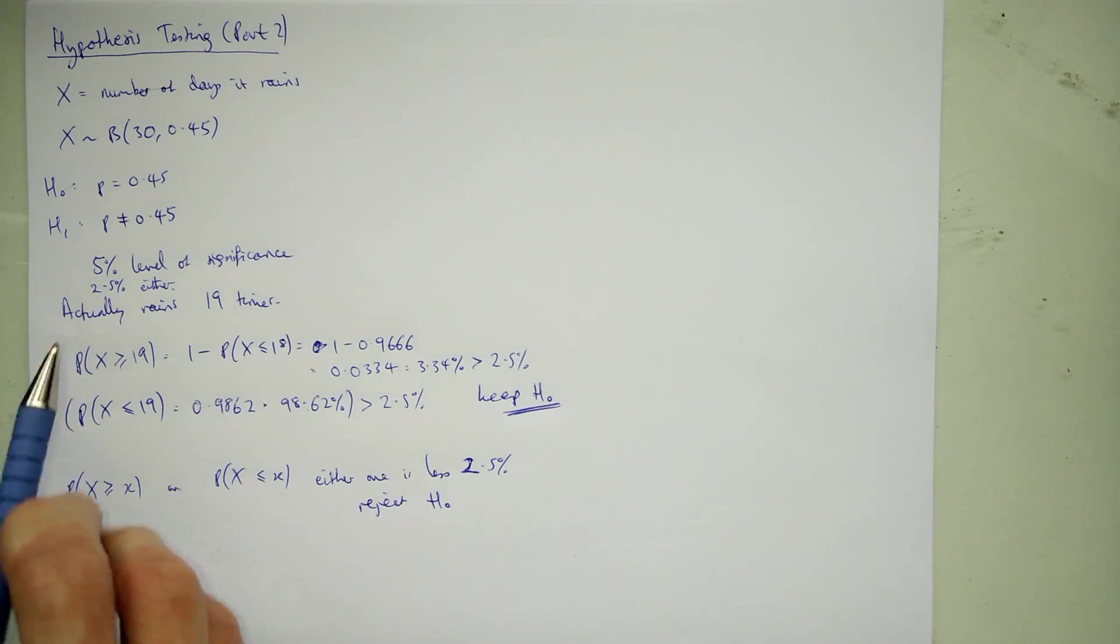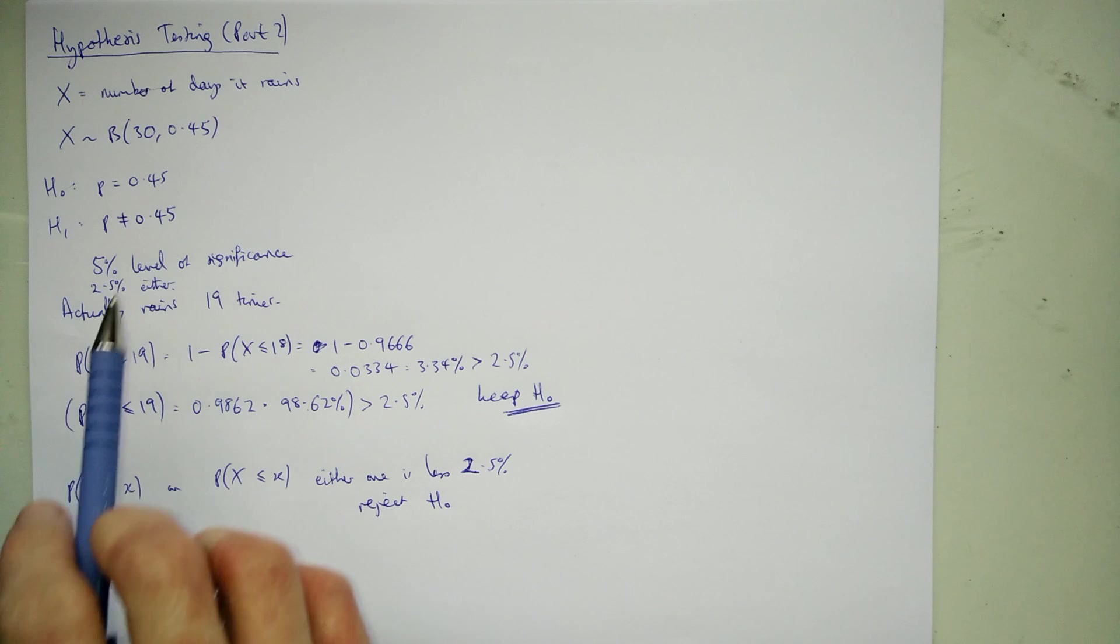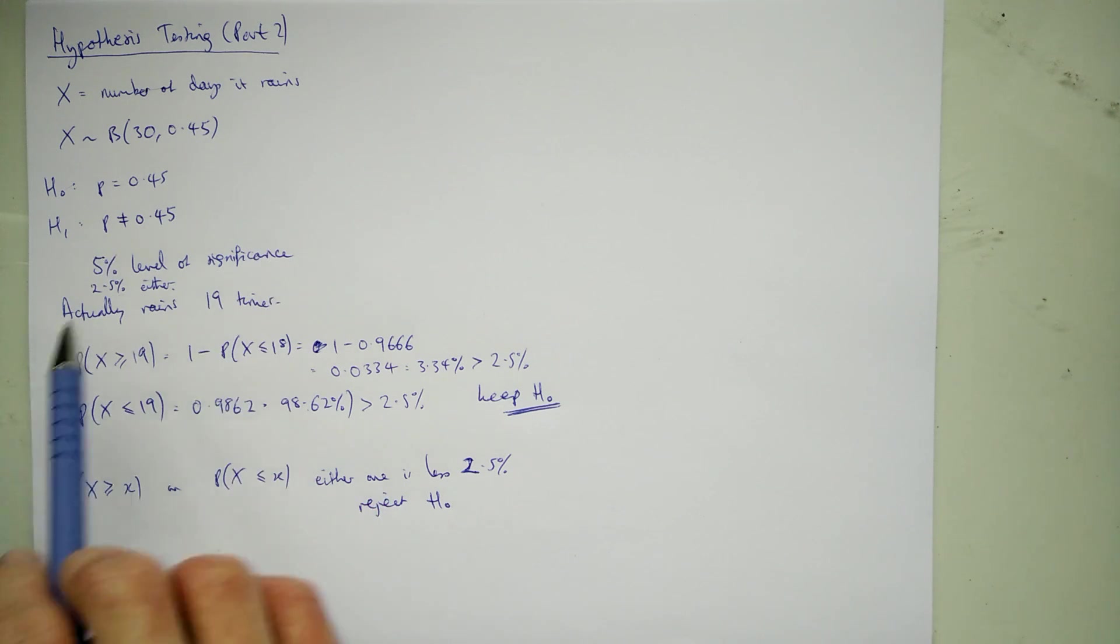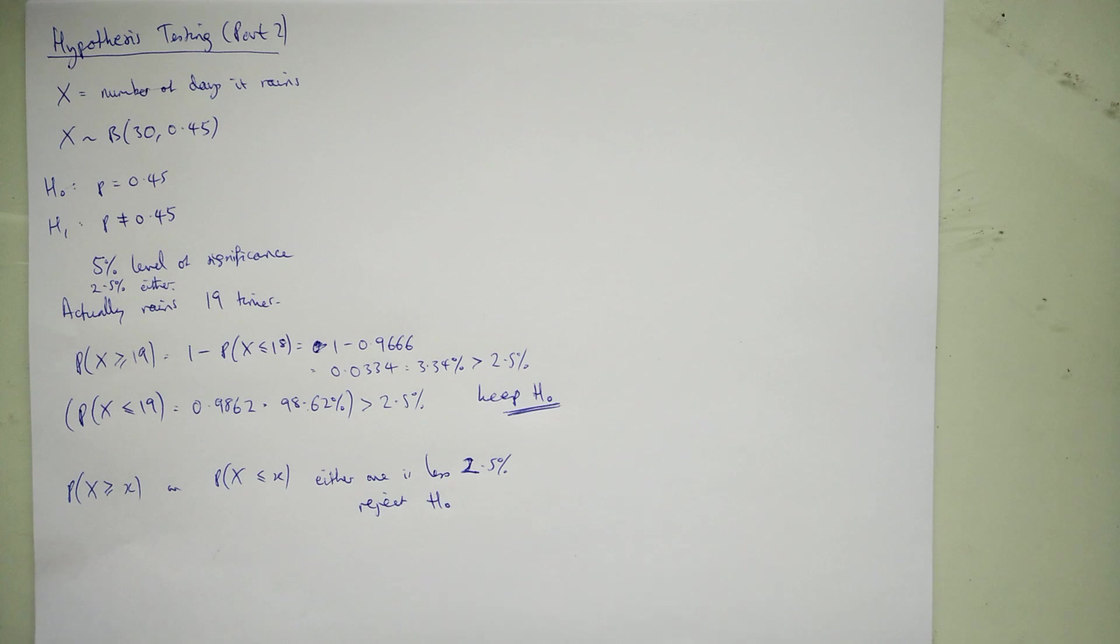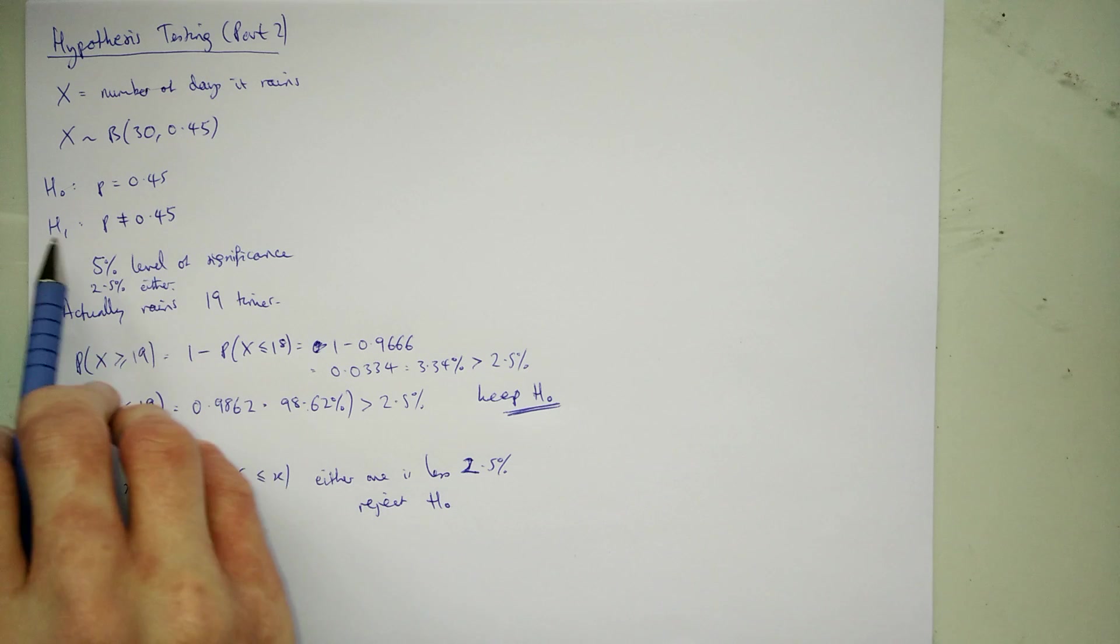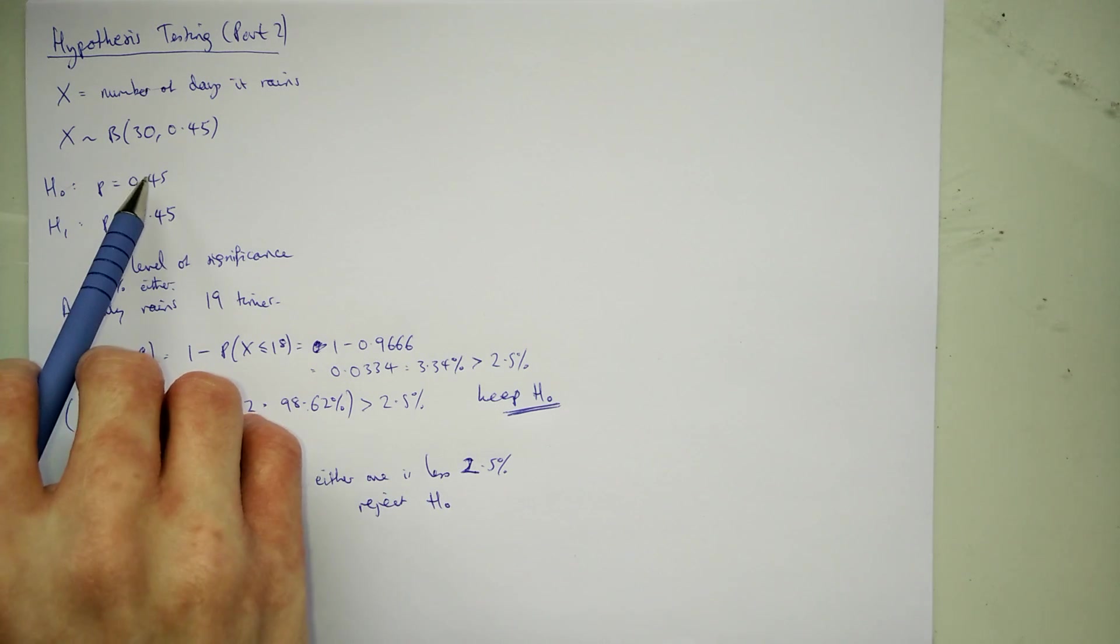It's interesting, right? Because if we'd have chosen P to be less than 0.45 then the 5% level of significance test would have told us to reject H0. So it makes a difference whether you specify beforehand whether you want the probability to be less than 0.45, bigger than 0.45 or not equal to 0.45 will affect the outcome. And you could then go back and do the same test now being less than 0.45 and get a reject response. So this alternative hypothesis here is important.